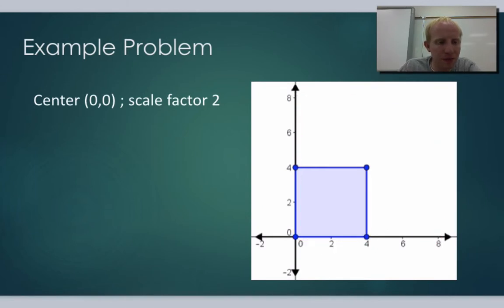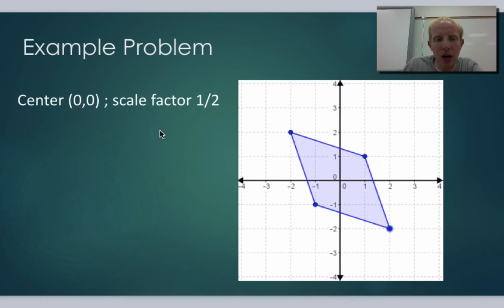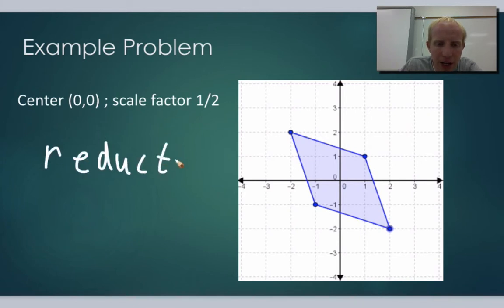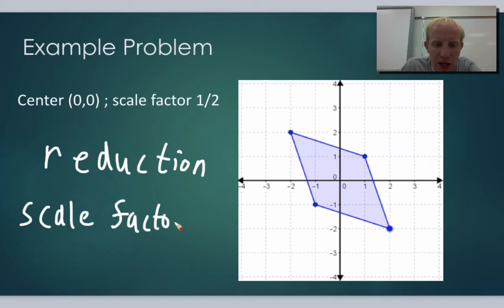Let's look at another example. Now we're centered at (0, 0) but with a scale factor of 1/2. We're actually getting smaller, because we're dividing each side by 2 — going in half. This has a special word: we call this a reduction. Any dilation that makes something smaller is a reduction, or basically if the scale factor is less than 1, then it's a reduction. In this case the scale factor is 1/2, so the shape is getting smaller.